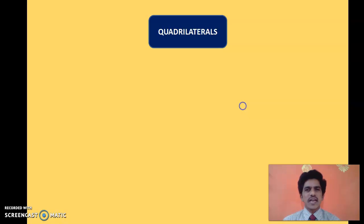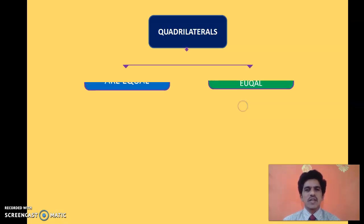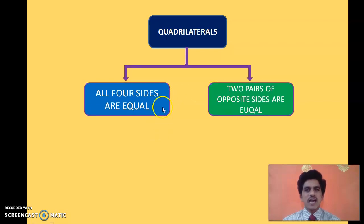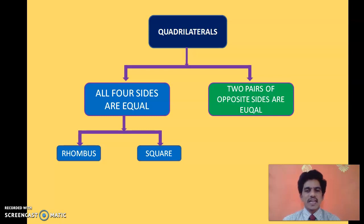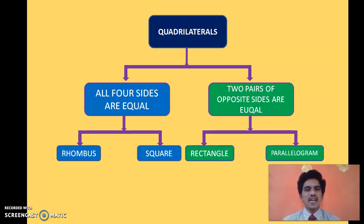Based on the lengths of the sides, let us revise the types of quadrilaterals. There are two cases: all four sides equal, or two pairs of opposite sides equal. When all four sides are equal, it could be a rhombus or a square. Both have all four sides equal, but in a square all angles are also 90 degrees. When pairs of opposite sides are equal, it is either a rectangle or a parallelogram.